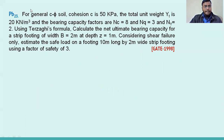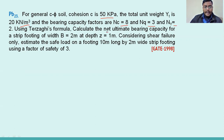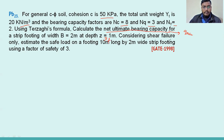The first question: for a c-φ soil, cohesion c is given 50 kilopascals, total unit weight γ is given 20 kilonewtons per meter cube, and bearing capacity factors Nc, Nq, and Nγ are given. Using Terzaghi's formula, calculate the net ultimate bearing capacity q_nu for a strip footing of width 2 meters and depth 1 meter, considering shear failure only.